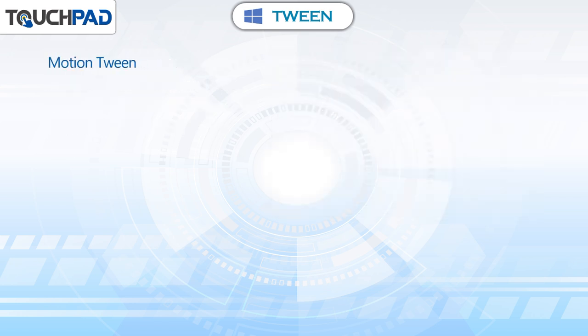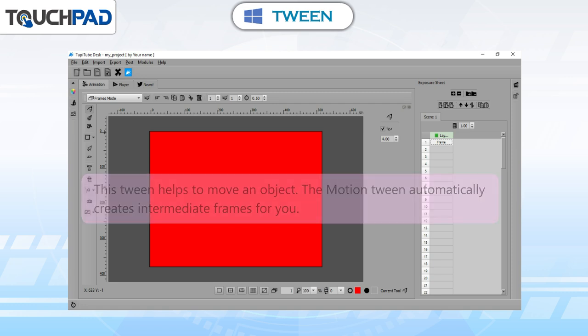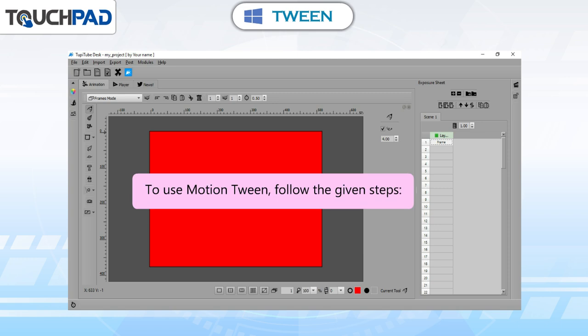Motion Tween: this tween helps to move an object. The Motion Tween automatically creates intermediate frames for you. To use Motion Tween, follow the given steps.